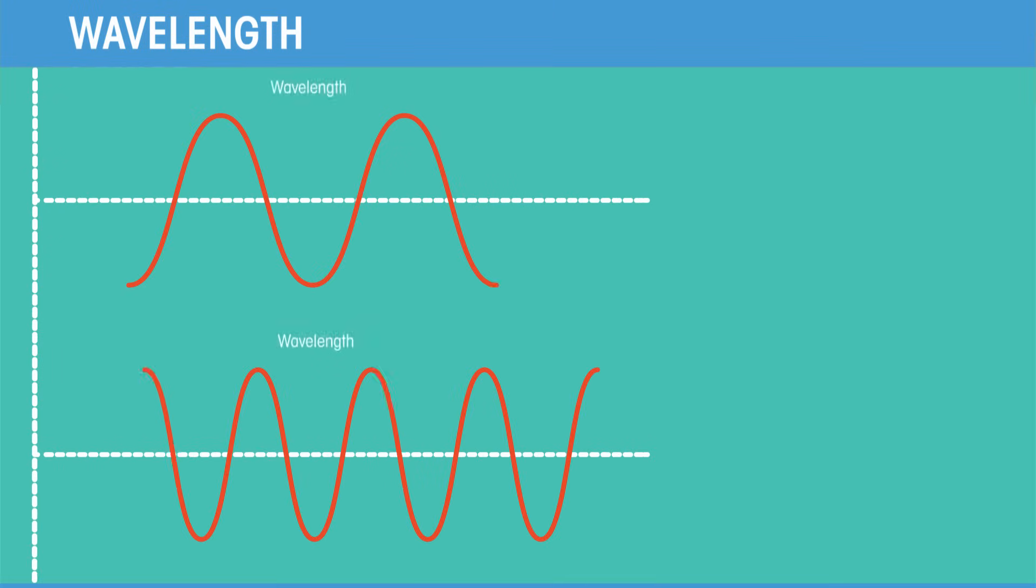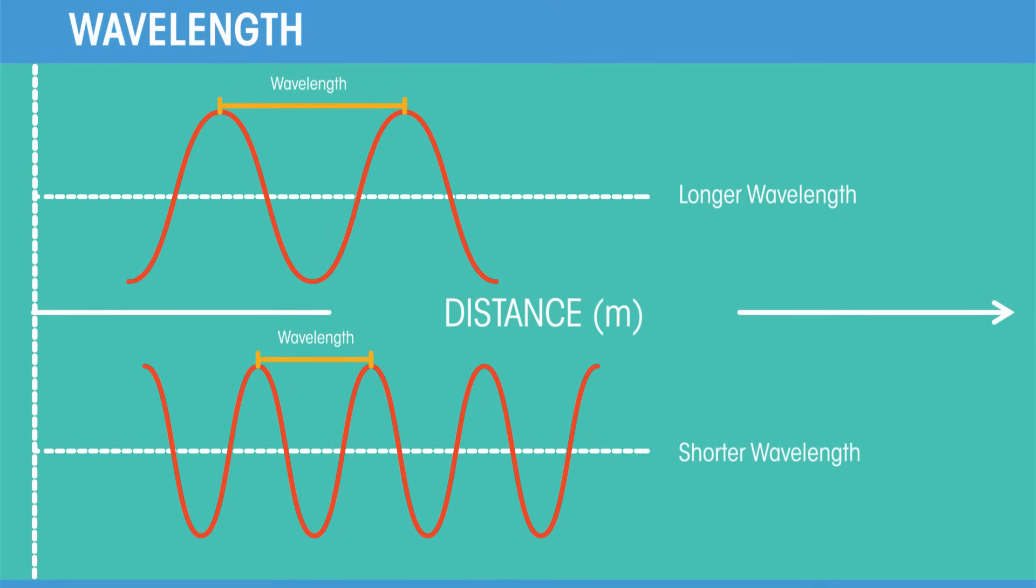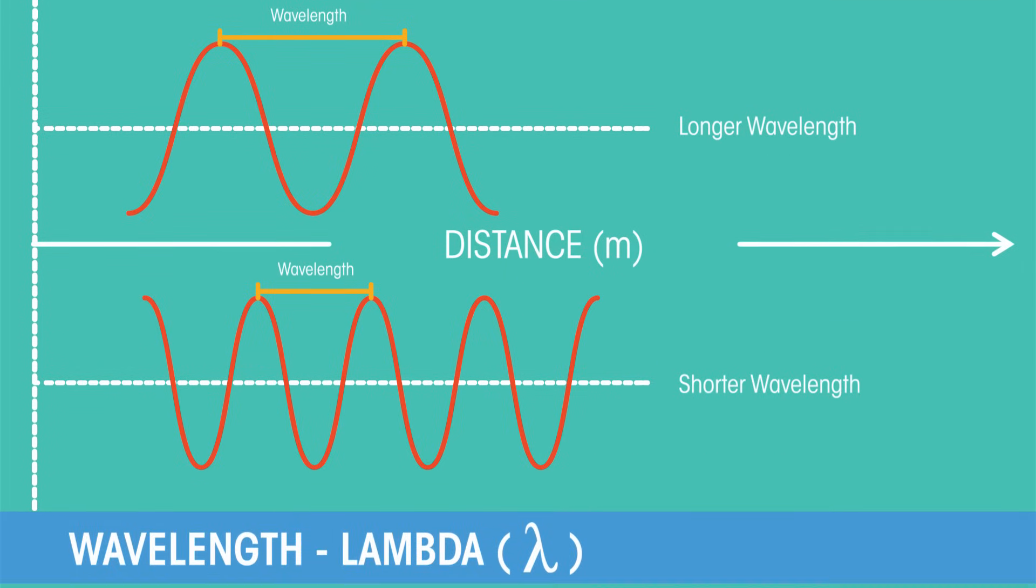Now for wavelength. The wavelength is the distance between a point on one wave and the same point on the next wave. For example, two peaks or two troughs. Wavelength is given the symbol lambda from the Greek letter and is usually measured in meters.